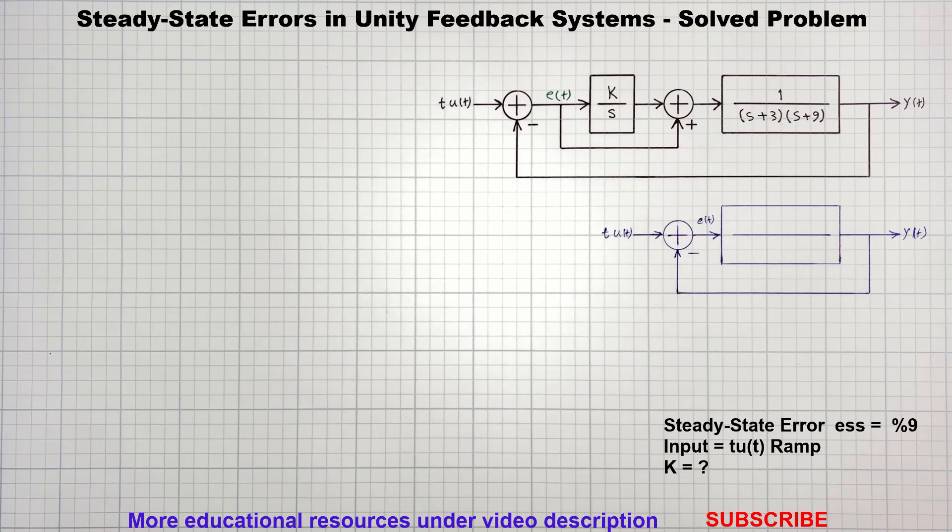For this unity feedback system, we are going to find the value of parameter k which makes the steady state error 9% for a ramp input.